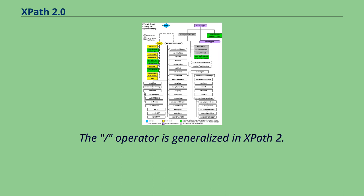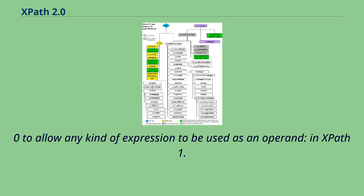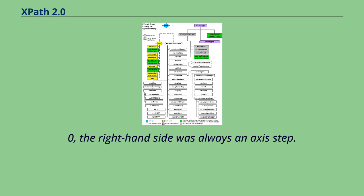The slash operator is generalized in XPath 2.0 to allow any kind of expression to be used as an operand. In XPath 1.0, the right-hand side was always an axis step.